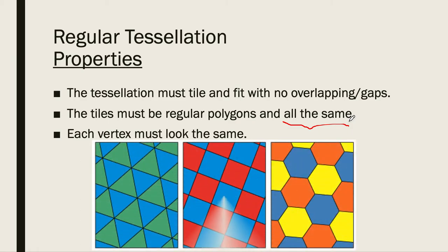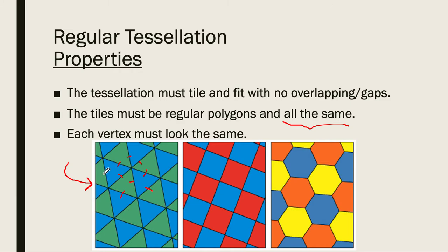Each vertex must look the same. In the first picture, it's composed of equilateral triangles where all lengths are equal. These are squares, and here we have a regular hexagon — six sides. So regular polygons made into a tessellation give us regular tessellations, as the word suggests.